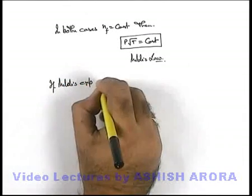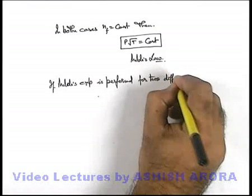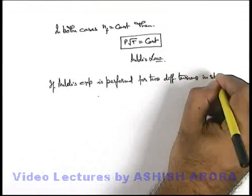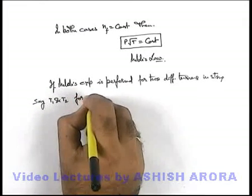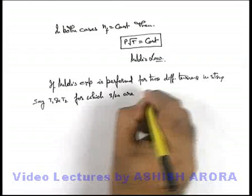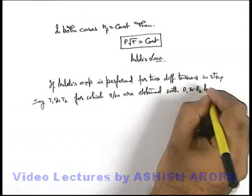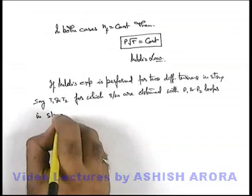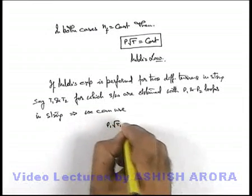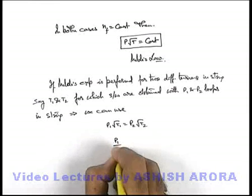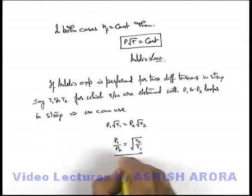If Melde's experiment is performed for two different tensions T₁ and T₂ in the string, for which stationary waves are obtained with p₁ and p₂ loops in the string, this implies we can use: p₁√T₁ = p₂√T₂. Or we can write the ratio of loops in the string for the two tensions as p₁/p₂ = √(T₂/T₁). This is the way how Melde's law is used.